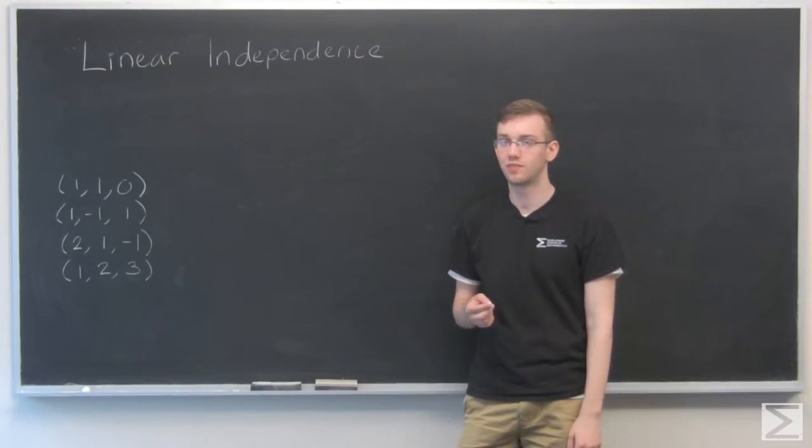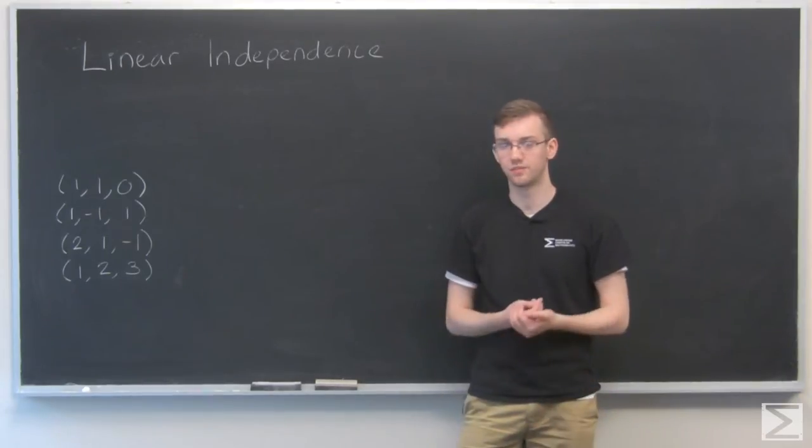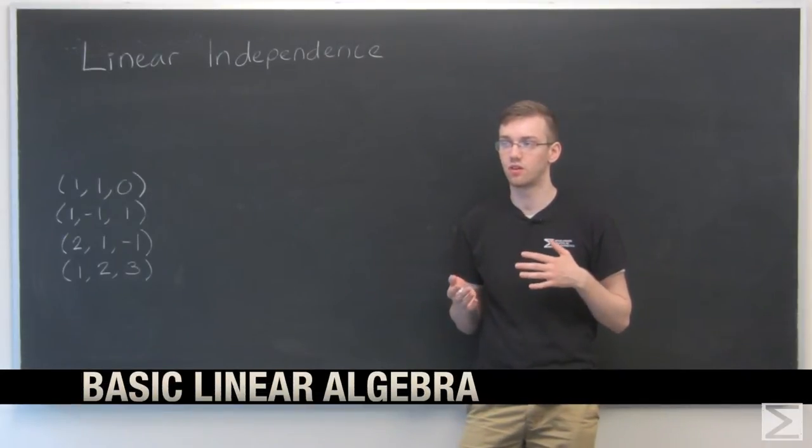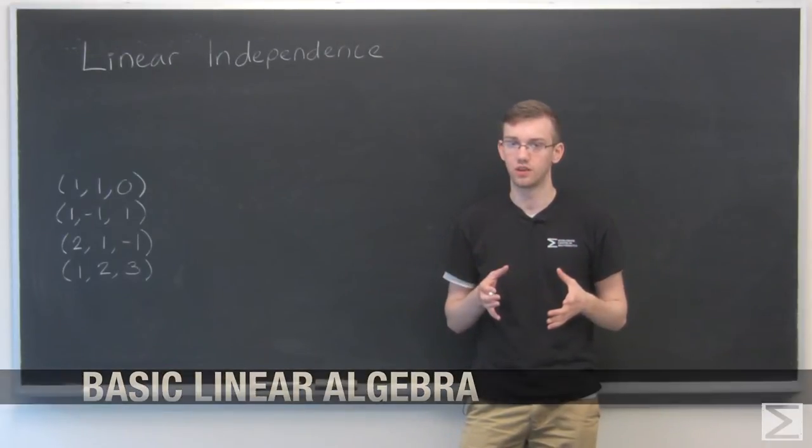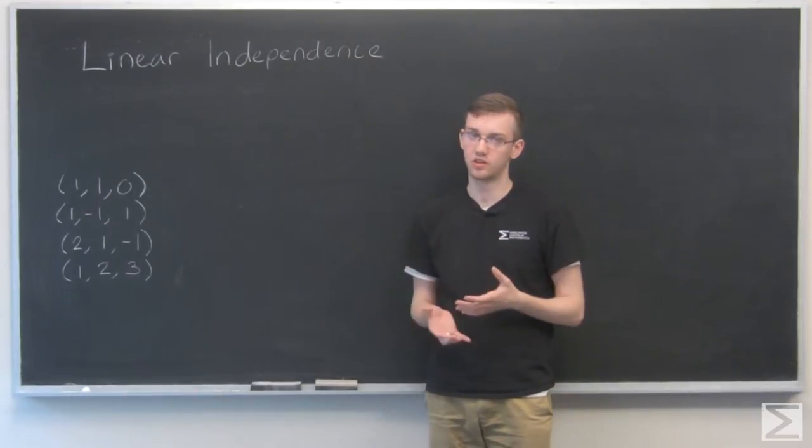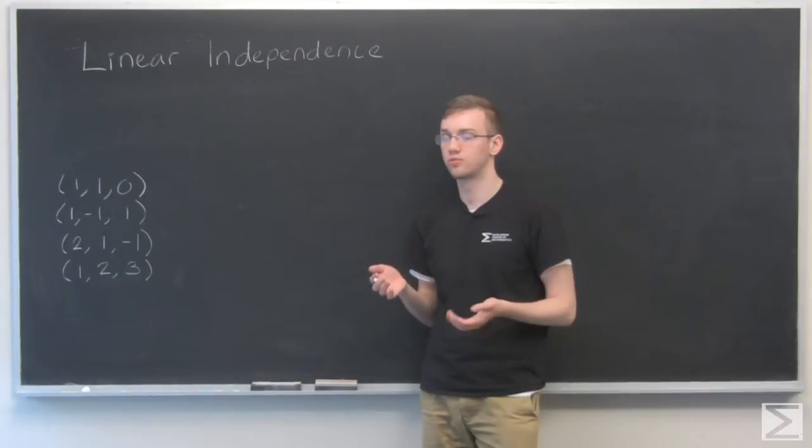What does it mean when we say a set of vectors is linearly independent? Well, that basically means that these vectors are all necessary in some way and that you can't form one just with a combination of the others.